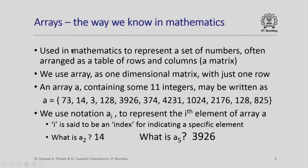We now look at the arrays as we know them in mathematics. You know when we want to represent a set of numbers often arranged as a table of rows and columns, we will call a matrix. For example, an array is nothing but a one dimensional matrix with just one row. Now an array A, let us say, contains some 11 integers. We may be able to write it as A equal to 73, 14, 3, 128, etc. These are all 11 values. Mathematically, we immediately understand that A is an array.